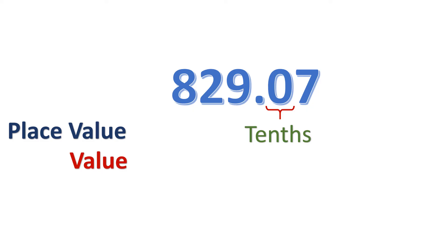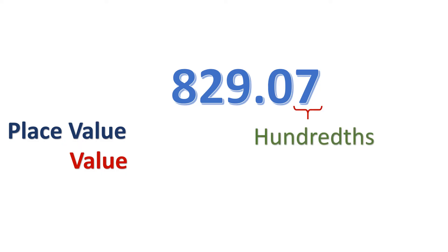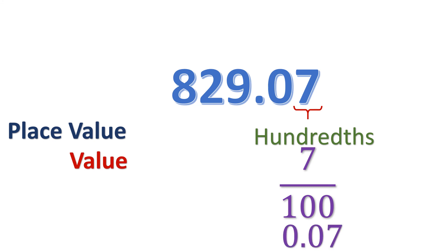Now for the right side of the decimal point in 829.07: the tenths place has a digit of zero, so the value is zero tenths — which is just zero. The hundredths place has a digit of seven, so there are seven hundredths, written as 0.07. This can also be read as 'seven hundredths.'